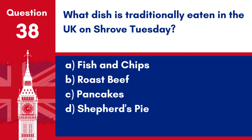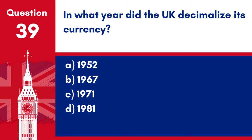Question 38. What dish is traditionally eaten in the UK on Shrove Tuesday? a. Fish and chips. b. Roast beef. c. Pancakes. d. Shepherd's pie. Answer: c. Pancakes. Pancakes are traditionally eaten in the UK on Shrove Tuesday.